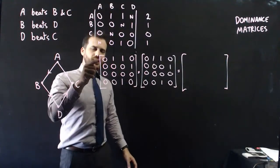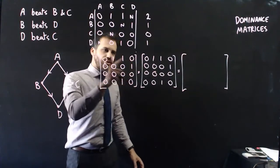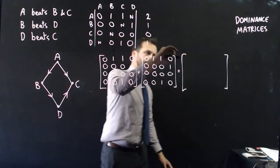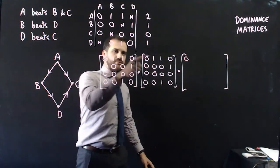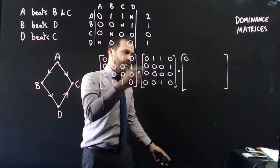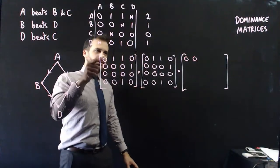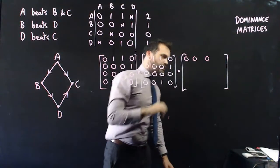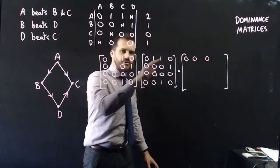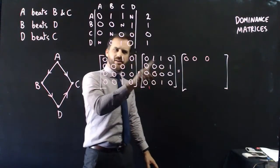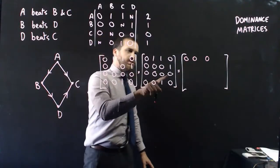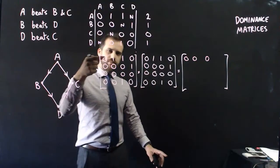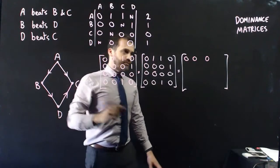Let's do the multiplication row by column. For the first row of A: 0×0, 1×0, 1×0, 0×0 — that gives 0. Next: 0×1, 1×0, 1×0, 0×0 — that gives 0. Then: 0×1, 1×0, 1×0, 0×1 — that gives 0. Finally: 0×0, 1×1 — that's important — 1×0, 0×0. This is the first time multiplying row by column doesn't give 0; you get 1.